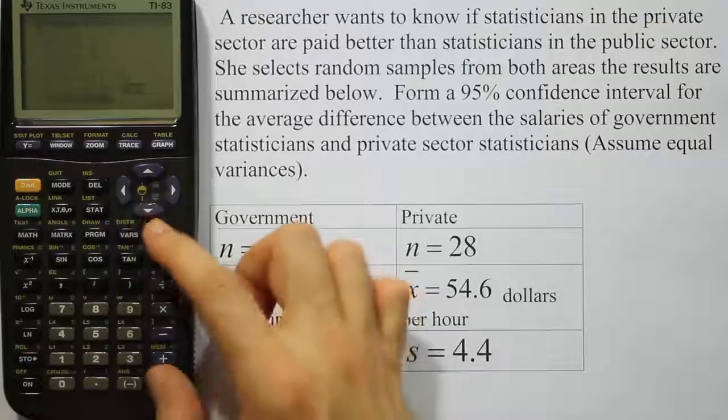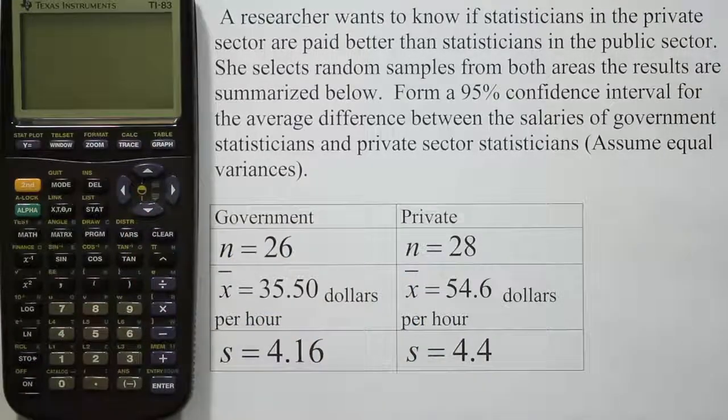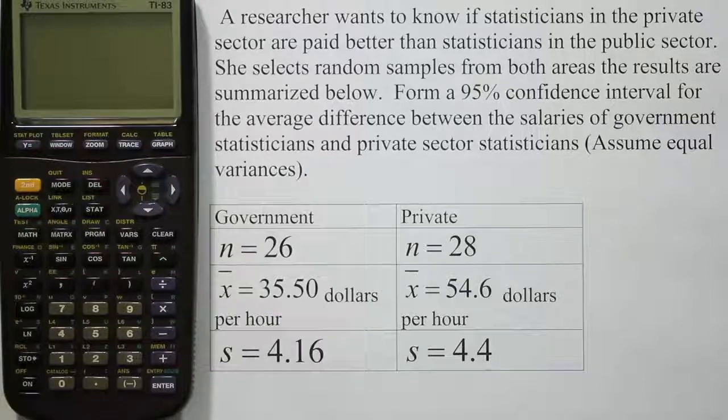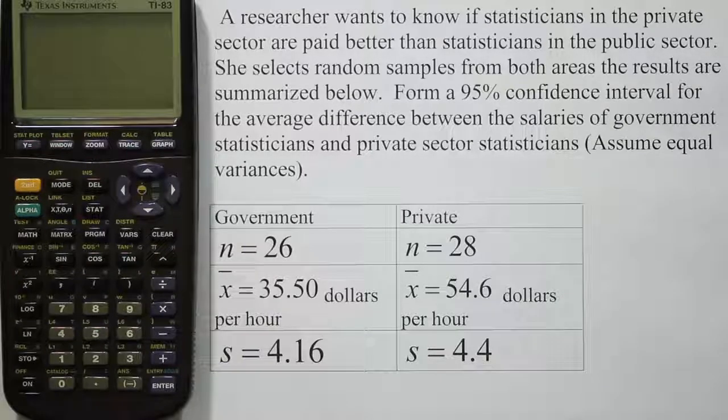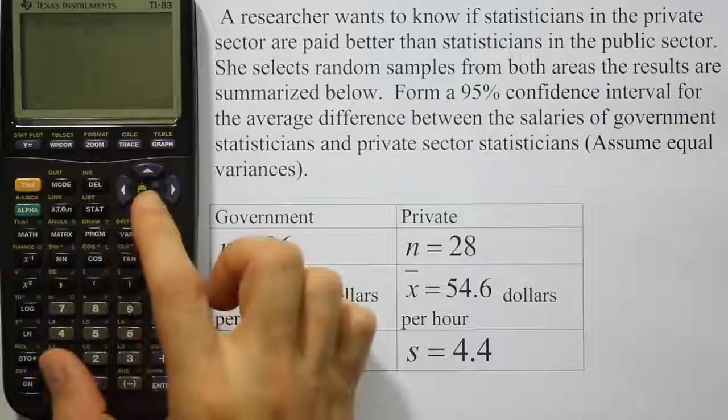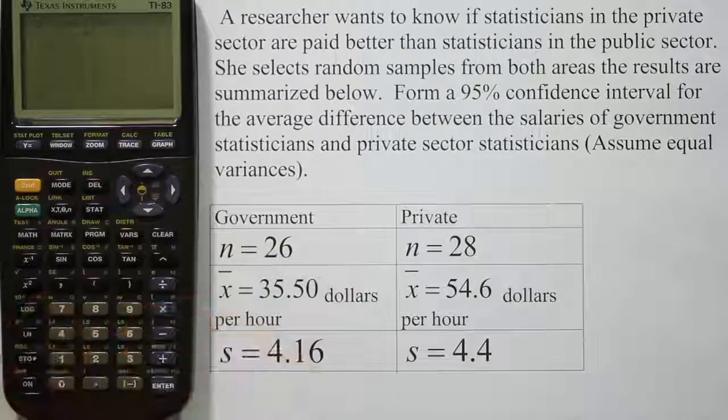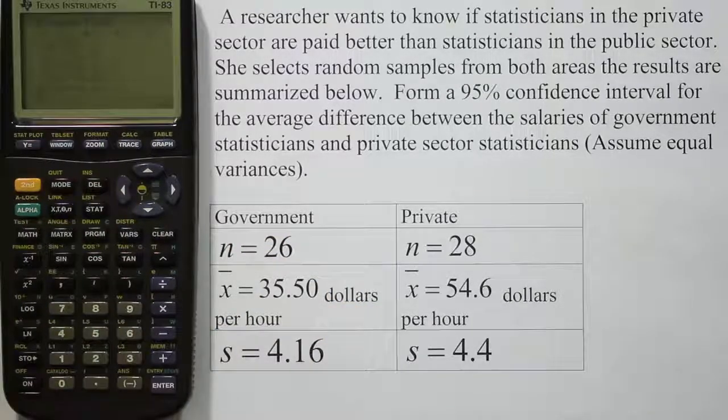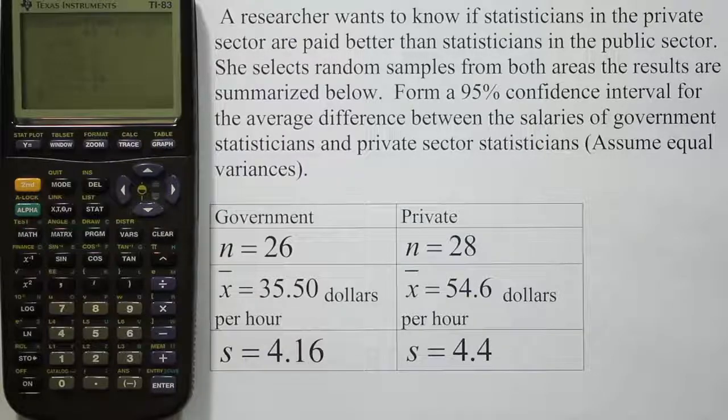Alright, so calculate afterwards and we're done. And the calculator takes a minute here because it's a t-interval. It's a little harder for the calculator to come up with the critical values for the problem. But when it does that, it gets -21.44 up to -16.76.